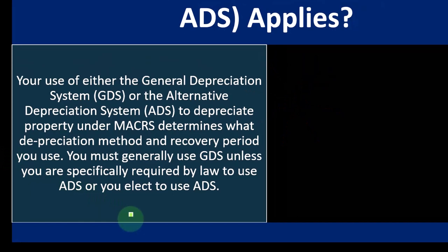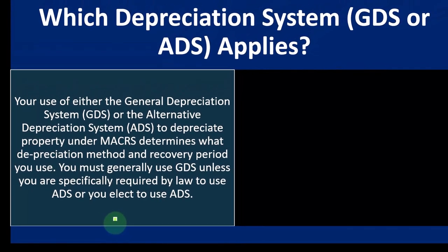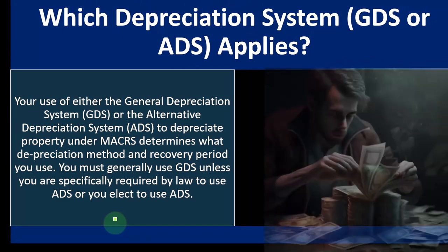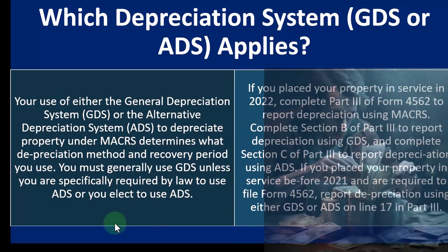So the default is going to be the GDS general depreciation system, unless you're required to deviate from that or make an election to do so.